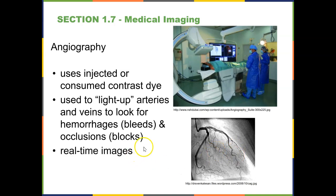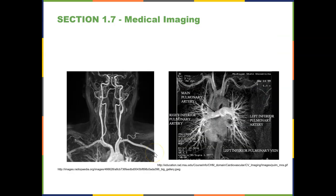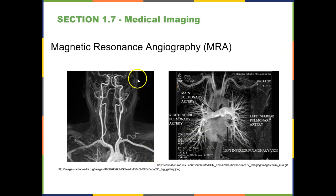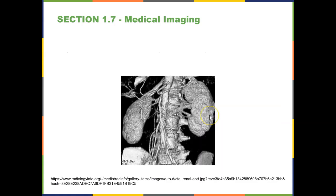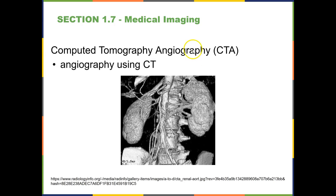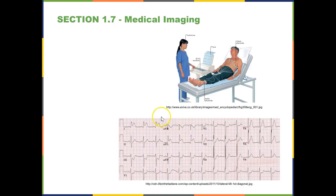You get real-time images — live still images and video. If we use angiography with an MRI, we call it an MRA, which uses magnets to look at blood vessels in the human body. If we use it with a CAT scan, it's called a CTA, and we get images looking inside the body with the blood vessels lit up.